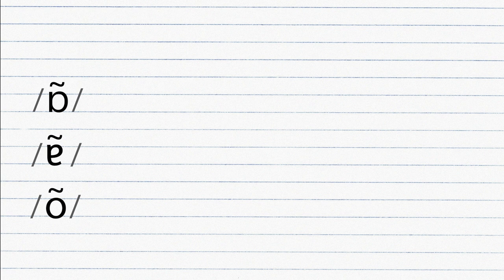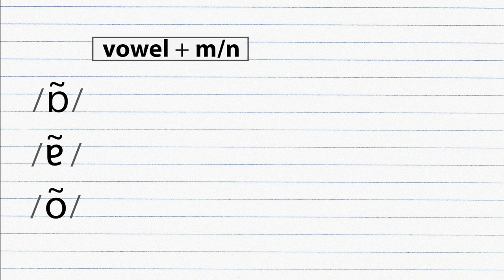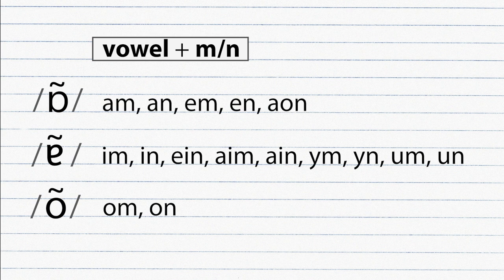Nasal means that the air passes through the nose when you pronounce these sounds. Nasal sounds appear when a vowel is followed by letter M or N. Most of the nasal sounds appear when they are before a consonant or they come at the end of a word.